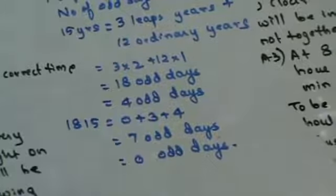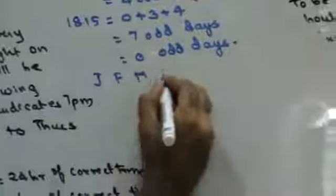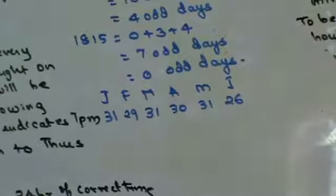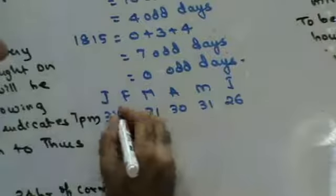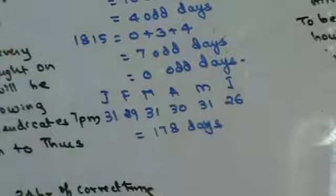Now the period from 1st January to 26th June 1816: since 1816 is a leap year, February has 29 days. Jan=31, Feb=29, Mar=31, Apr=30, May=31, Jun=26 — total 178 days. 178 divided by 7 leaves remainder 3, so 3 odd days.